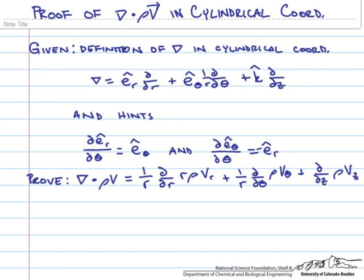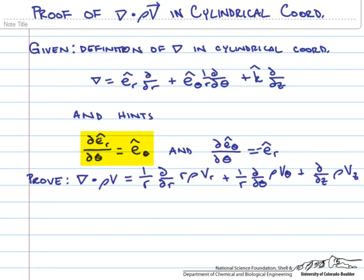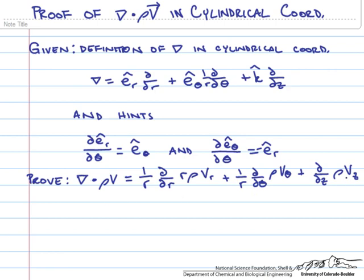This recording shows a proof of the gradient dot rho times the velocity vector in cylindrical coordinates. You are given the definition of the gradient in cylindrical coordinates and two hints: the differential of the unit vector in the radial direction with respect to theta equals the unit vector in the theta direction, and the derivative of the unit vector in the theta direction with respect to theta equals the negative of the unit vector in the radial direction. You are also given the final answer, and you are asked to prove it — to show that you can derive this equation.